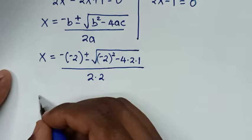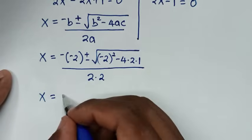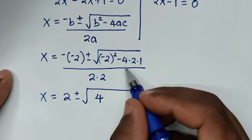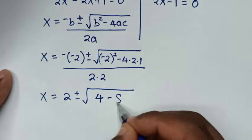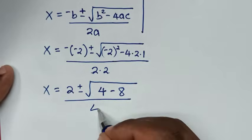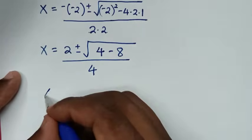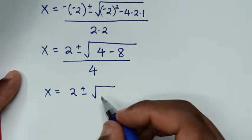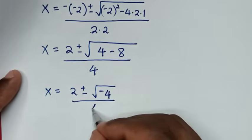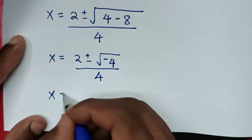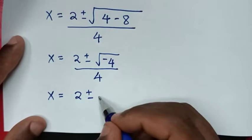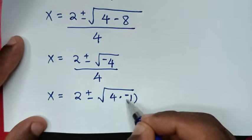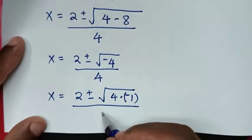Simplifying: x equals positive 2, plus or minus square root of 4 minus 8, over 4. That gives x equals 2 plus or minus square root of negative 4, over 4. We rewrite negative 4 as 4 times negative 1, over 4.